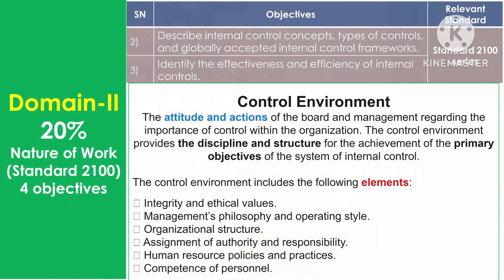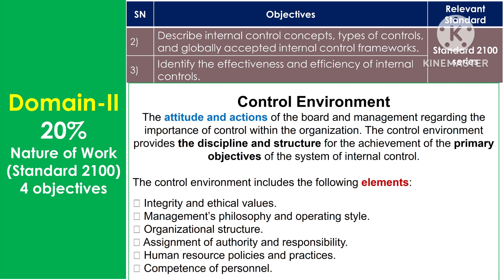Now let's understand the definition of control environment. The attitude and actions of the board and management regarding the importance of controls within the organization is the control environment. It provides the discipline and structure for the achievement of the primary objectives of the system of internal control. The control environment includes: integrity and ethical values; management's philosophy and operating style; organizational structure; assignment of authority and responsibility; human resource policies and practices; and competence of personnel.